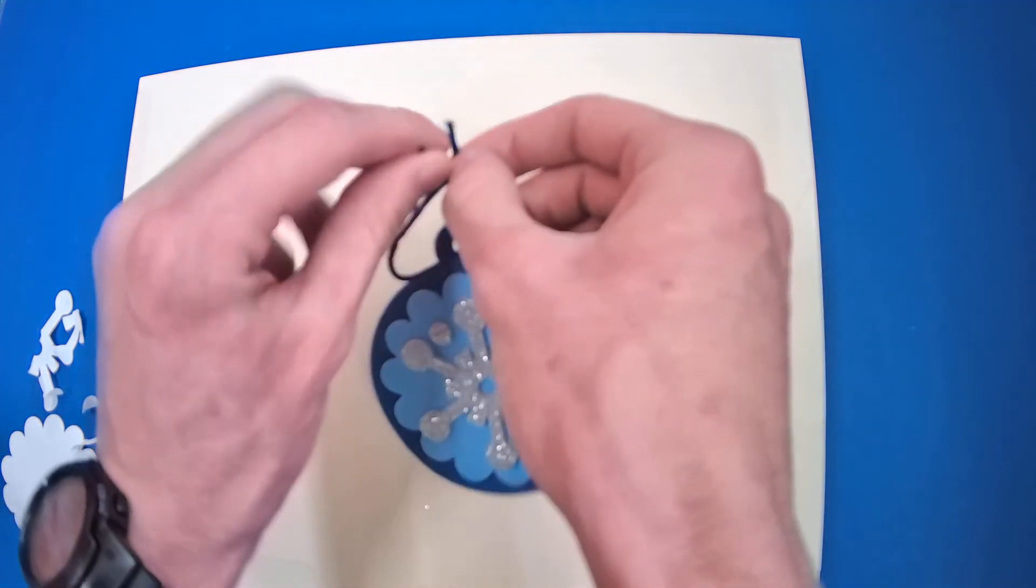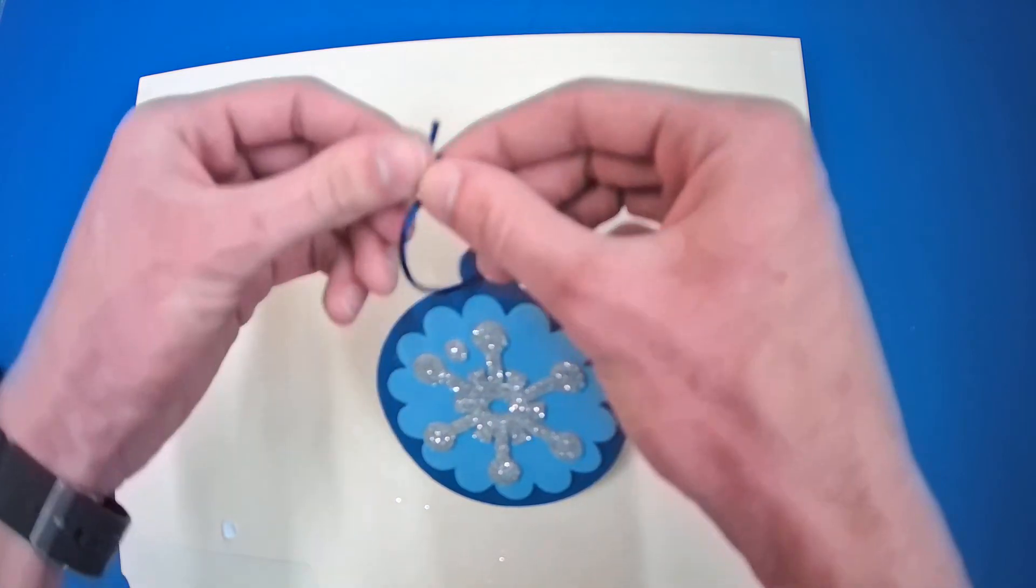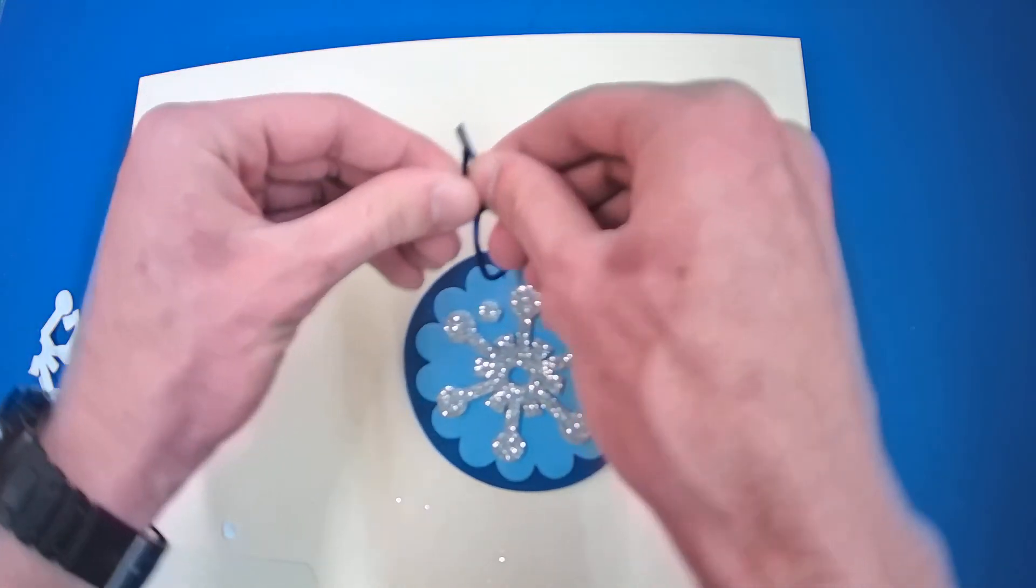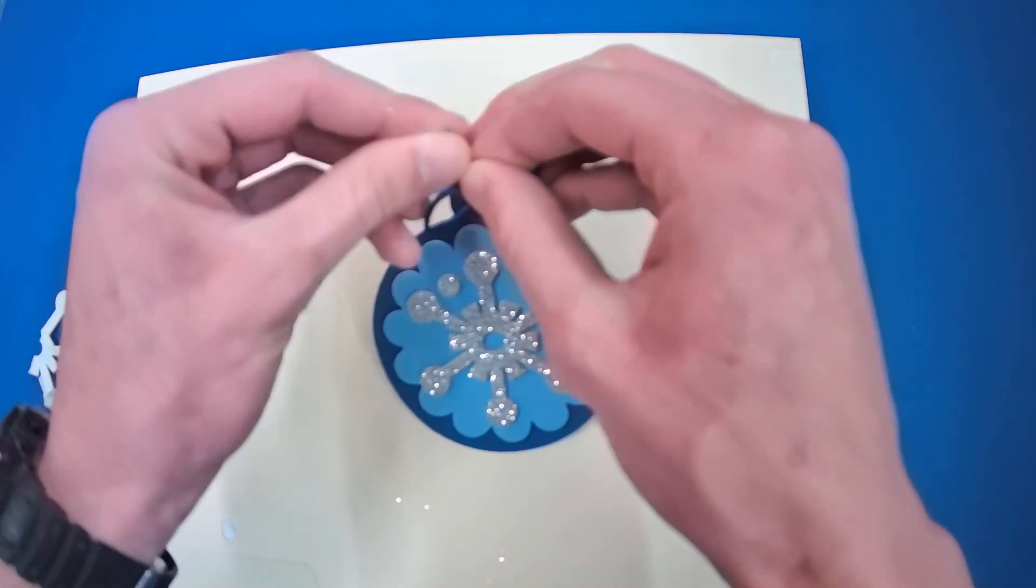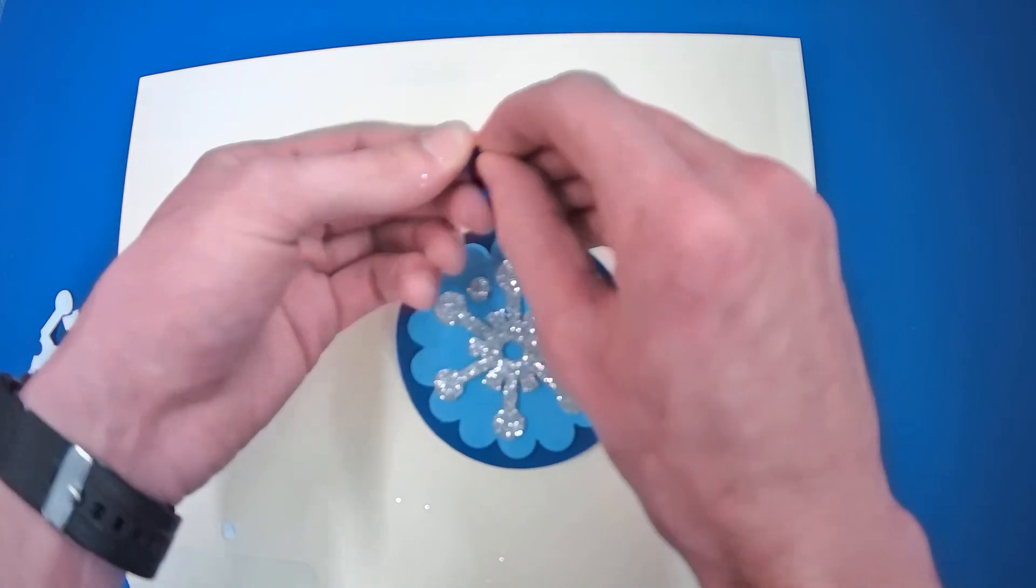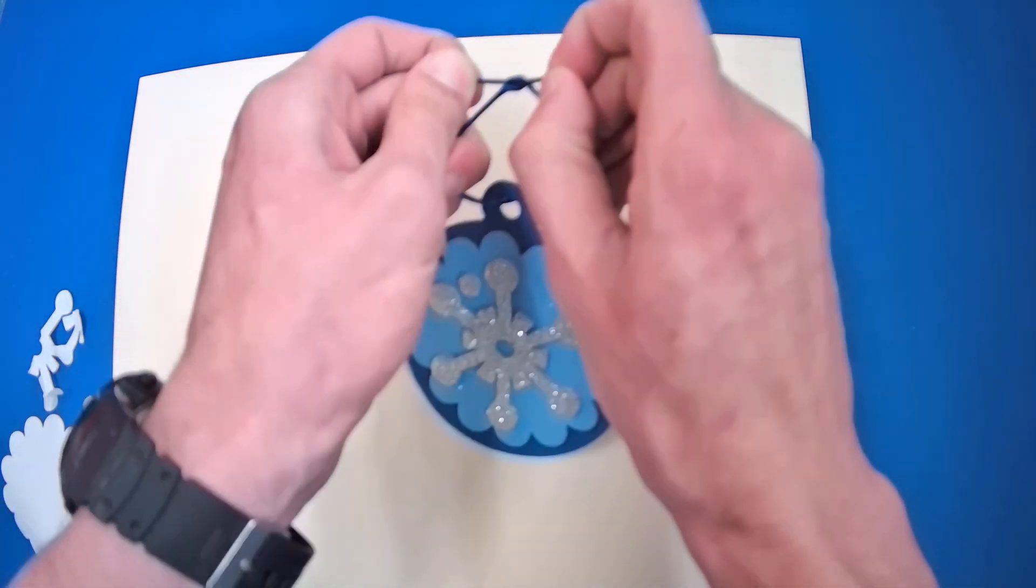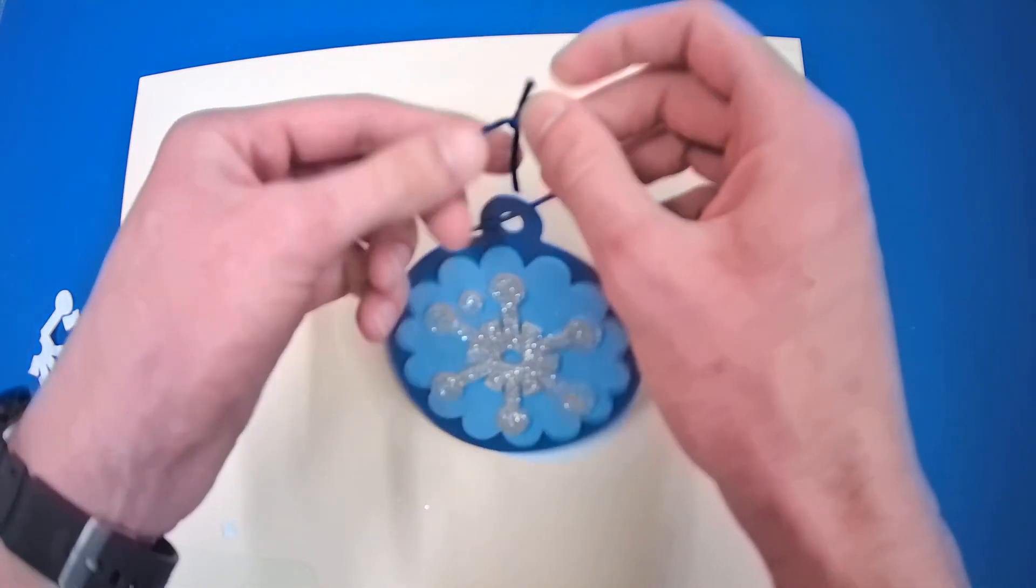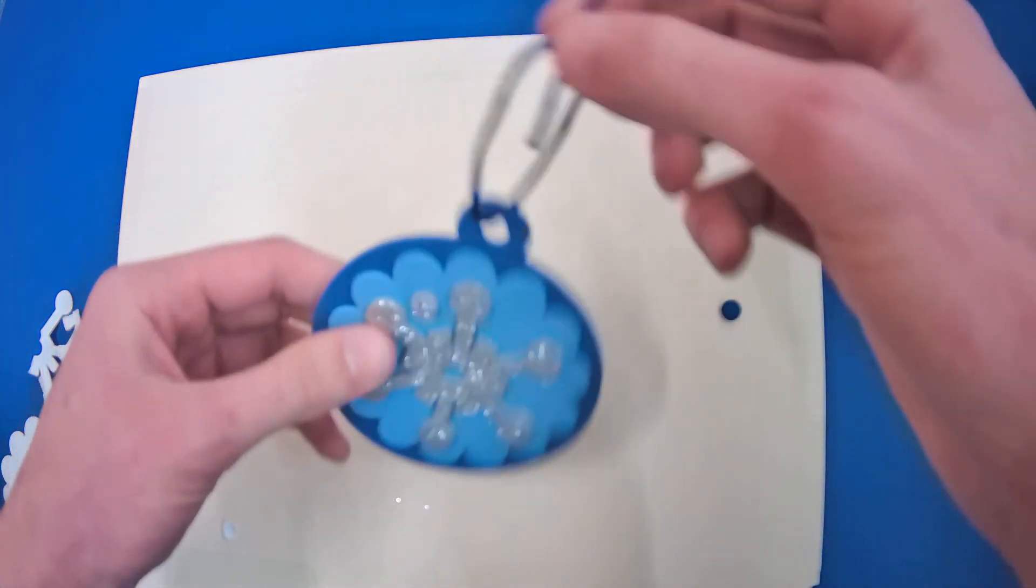You're going to bring it through the hole like that. Over and under. It's easy to do. Then reach through the hole and pull it through. We're going to do the same thing again. So over and under. And then through that hole. Pull it tight. It makes a little knot. And there you have it.